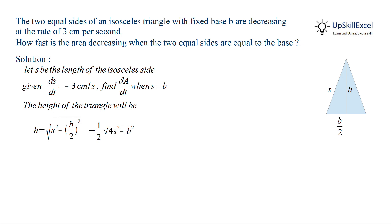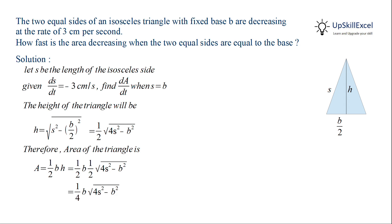Now we can find the area of the triangle, which is equal to half multiplied by base multiplied by height. The base is fixed and the height we have already obtained. Substituting it, we get area equal to (1/4) multiplied by base multiplied by the square root of 4s squared minus b squared.